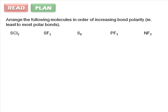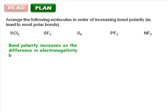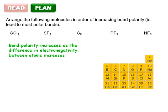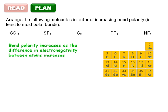In planning this question, you should recall that bond polarity increases as the difference in electronegativity between atoms increases. This should prompt you to pull out the periodic table and remind yourself of the periodic trend for electronegativity, which states that electronegativity increases as you move toward fluorine.